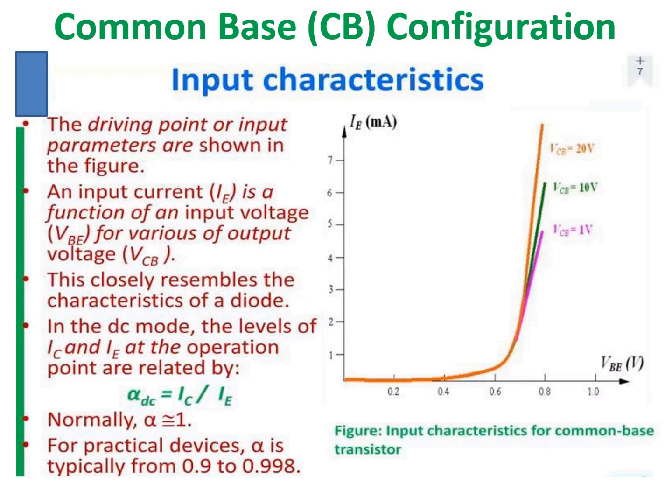Three curves are plotted for three different values of output voltage: VCB = 1 V, VCB = 10 V, and VCB = 20 V. More current flows when higher levels of collector-base voltage are used — that is, higher input current IE is observed for higher levels of VCB.